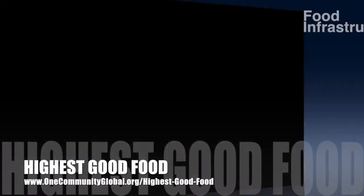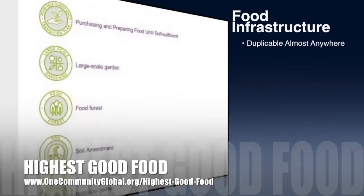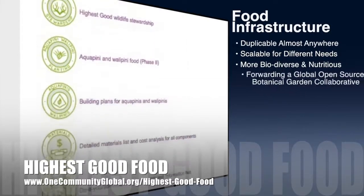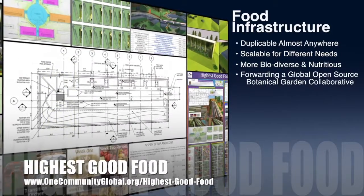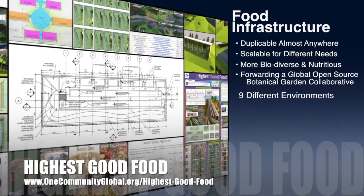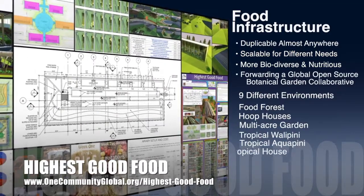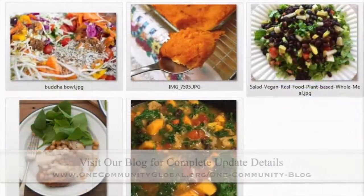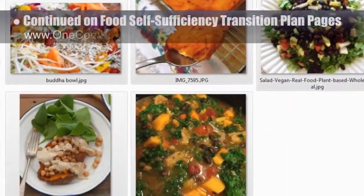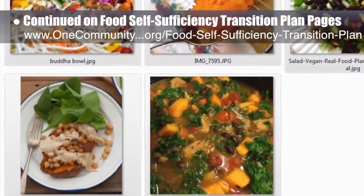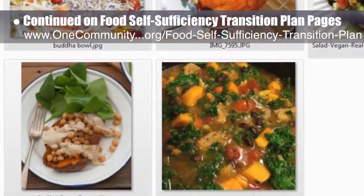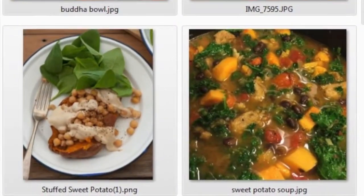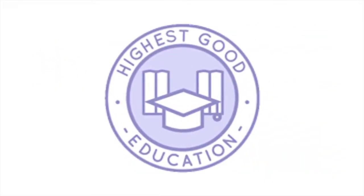One Community's approach to highest good food is duplicable almost anywhere, scalable for different needs, more biodiverse and nutritious, part of forwarding a global open source botanical garden collaborative, and includes nine different free shared and duplicable growing environments. This week the core team continued work on the food calculations on the food self-sufficiency transition plan pages, and created three more days of recipes and food intake for a 130-pound female.